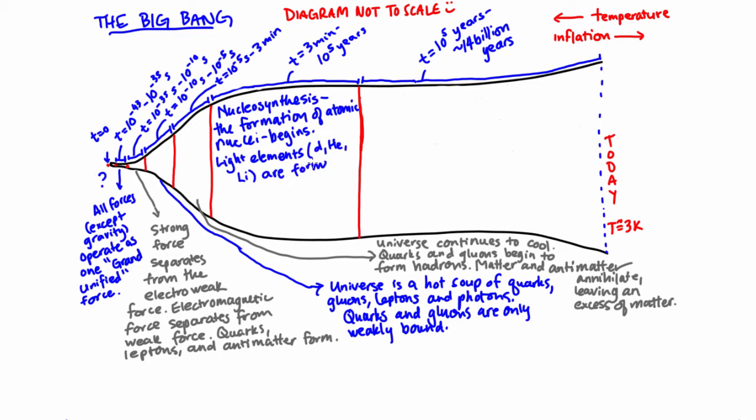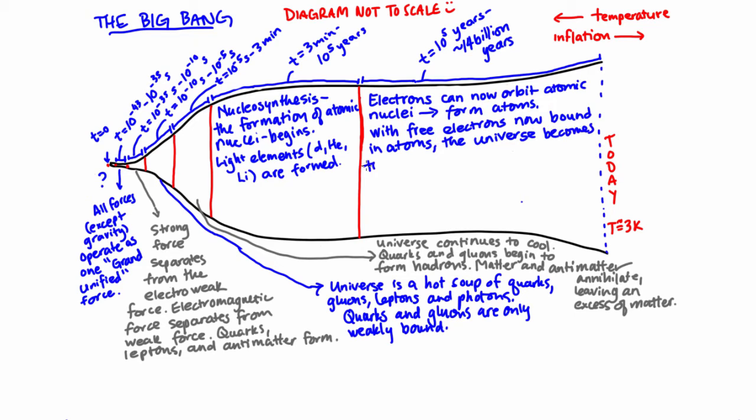10 to the 5 years to today, electrons began to orbit atomic nuclei in order to form atoms, and for the first time, the universe was not full of free electrons. Now these electrons scattered light and other electromagnetic waves pretty readily, so up until this point, the universe has been pretty opaque.